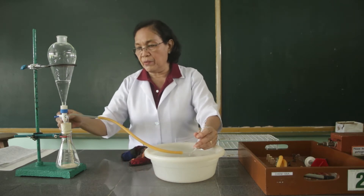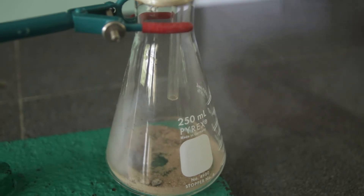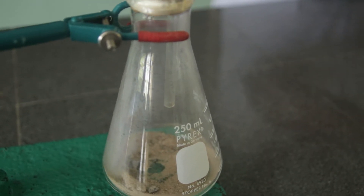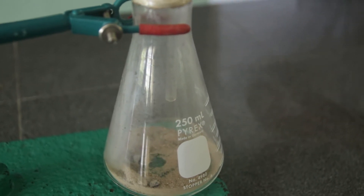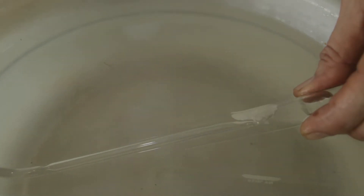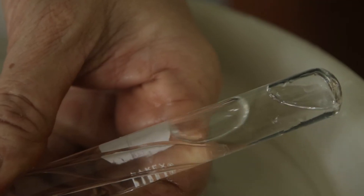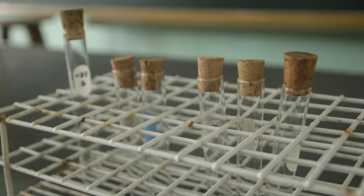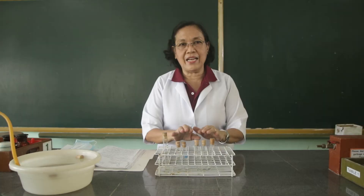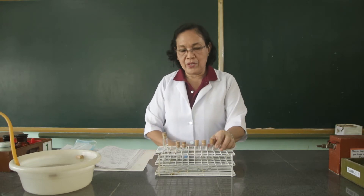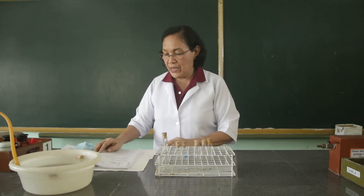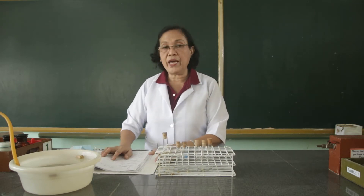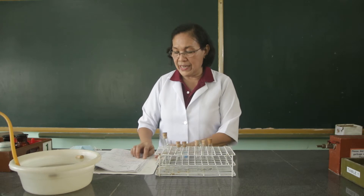We are now going to run down the water from the separatory funnel. I have already collected the five test tubes of the acetylene gas. You saw that I collected this by the water displacement method. We are going to submit this acetylene gas to the following tests. For the first test, we have the formation of copper acetylide.